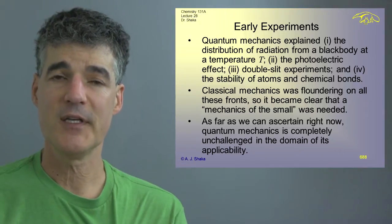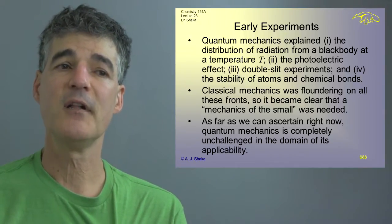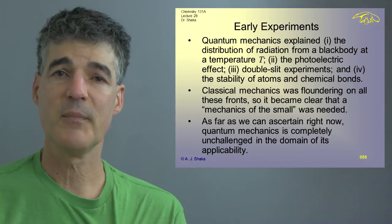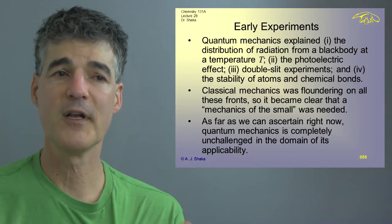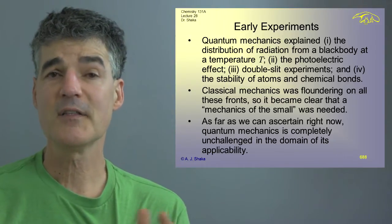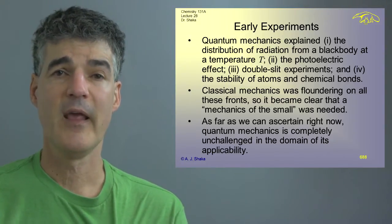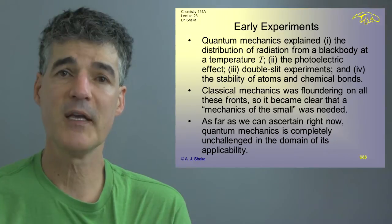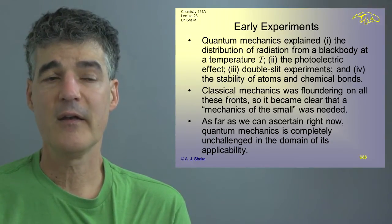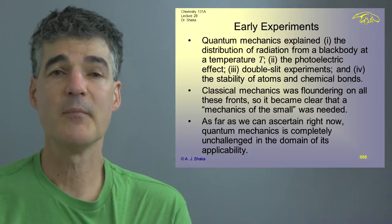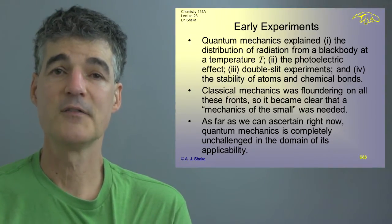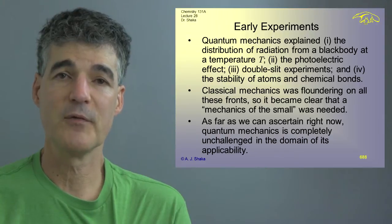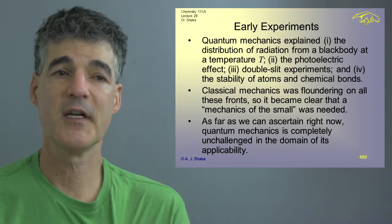And finally there was, we touched on it briefly but there was just the stability of atoms and chemical bonds both of which were very difficult to explain with classical mechanics and were left as kind of an unsolved riddle. But so classical mechanics was floundering on all these fronts and whenever our theory of knowledge is floundering that means that we have to think more deeply and we need to perhaps invent a new idea and this was of course an extremely exciting time but it was clear that a mechanics of the small so to speak was needed and that we couldn't just extrapolate from our everyday experience with big objects when we got down to these very tiny particles.